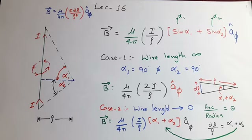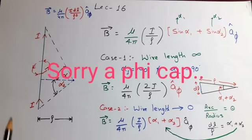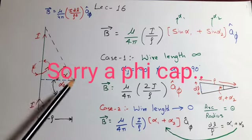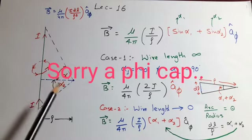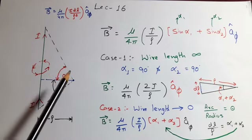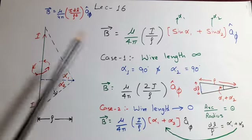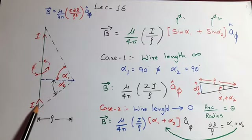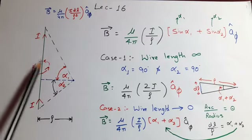From Biot-Savart's law, we know dB is equal to mu upon 4 pi into i·dl upon r-square cross a_r-cap. This magnetic flux density is due to a small current element.